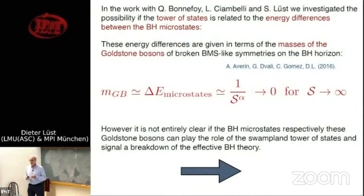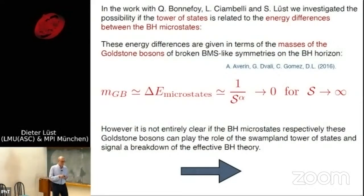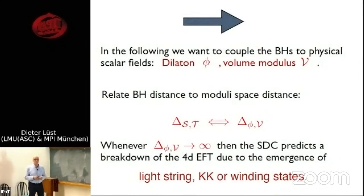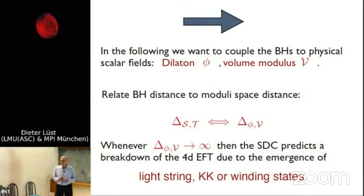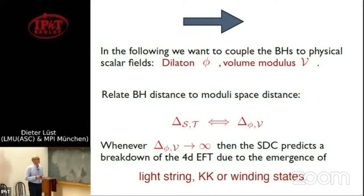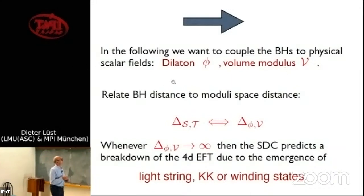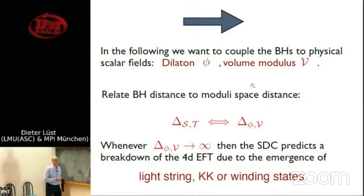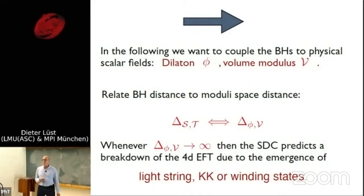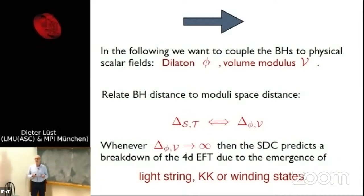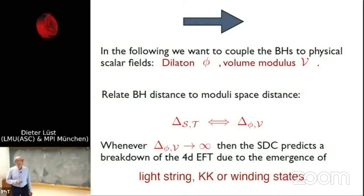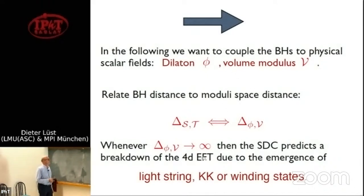I want to go in a somewhat different direction and couple the black holes to physical scalar fields — in particular to the dilaton or the volume modulus of some compactification. In other words, I consider generalized solutions coupled to scalar fields in gravity or supergravity. The aim is to relate the parameters S and T and their corresponding distances to the more established distances with respect to the scalar field moduli space — the dilaton and the volume. Then whenever Δφ or ΔV becomes large, the swampland distance conjecture predicts a breakdown of the 4D effective field theory due to emergence of light string states, KK or winding modes.